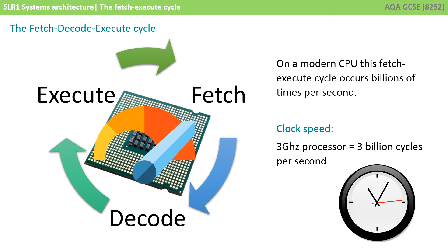On a modern CPU, this fetch-execute cycle occurs billions of times per second, and is called the processor's clock speed. Clock speed is measured in hertz, with one hertz meaning one cycle per second.